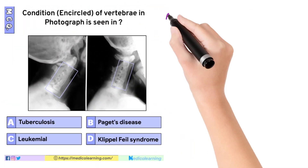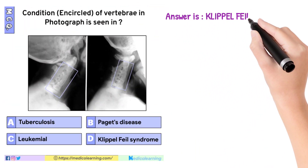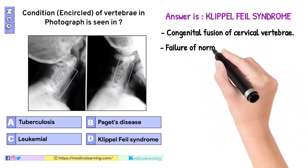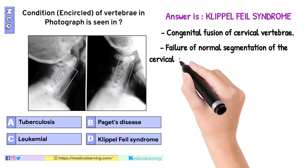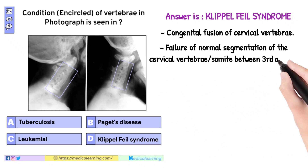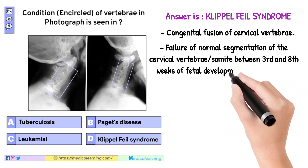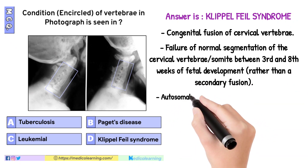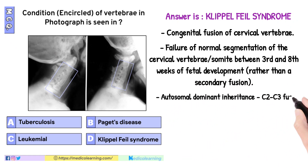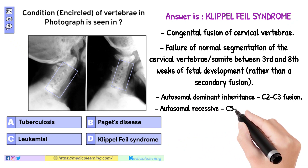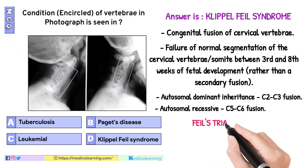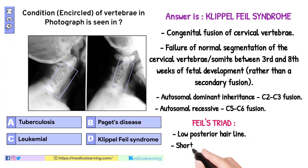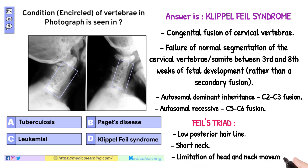In this question the answer is Klippel-Feil syndrome — congenital fusion of cervical vertebrae. It results from failure of normal segmentation of the cervical vertebrae somites between the 3rd and 8th weeks of fetal development, rather than a secondary fusion. Inheritance: autosomal dominant for C2-C3 fusion; autosomal recessive for C5-C6 fusion. Feil's triad includes low posterior hairline, short neck, and limitation of head and neck movements.